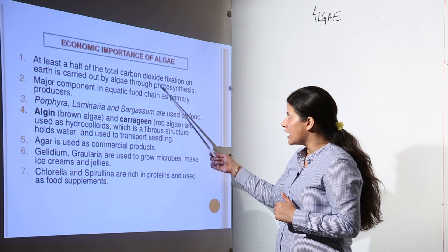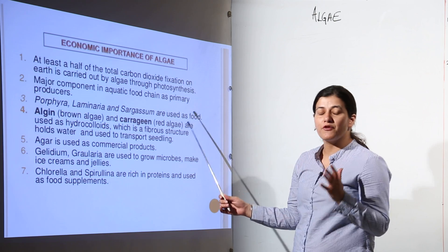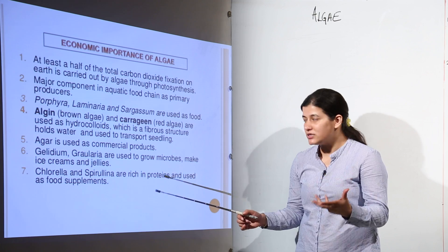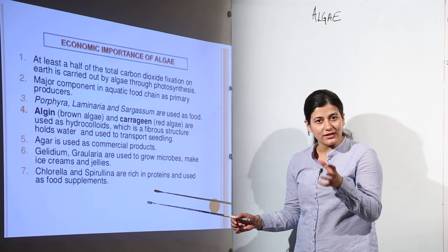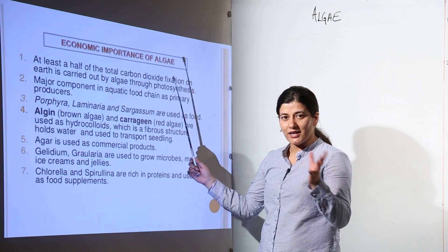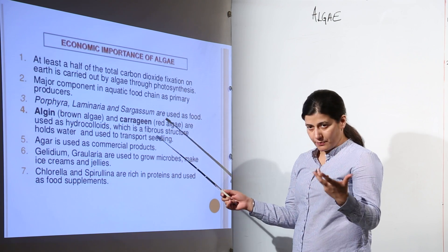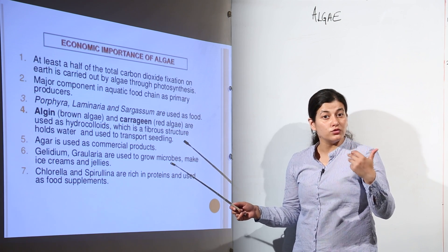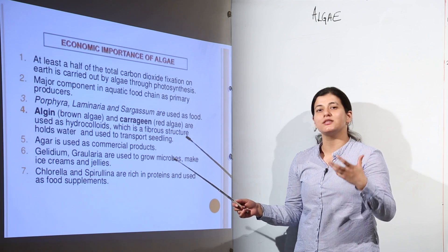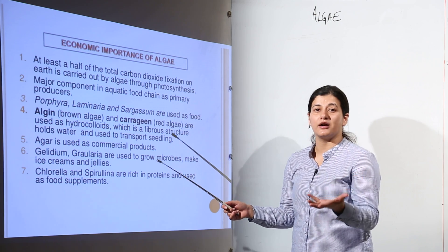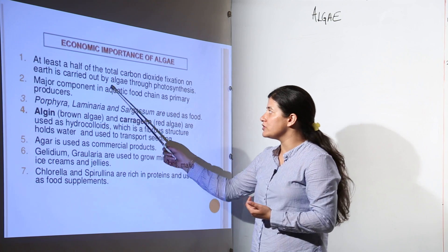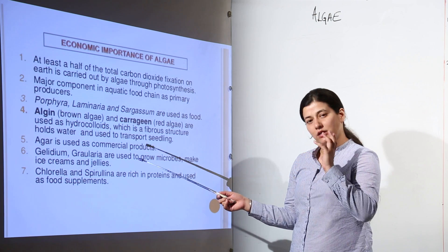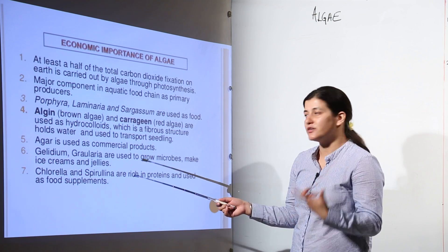There are seven economic points to discuss. First, half of the total carbon dioxide fixation — that is, half of all photosynthesis on Earth — is carried out by aquatic algae. Whenever carbon dioxide fixation occurs, oxygen is released, so at least 50% of the oxygen we breathe is produced by algae. Algae are also a major component of the aquatic food chain as primary producers.